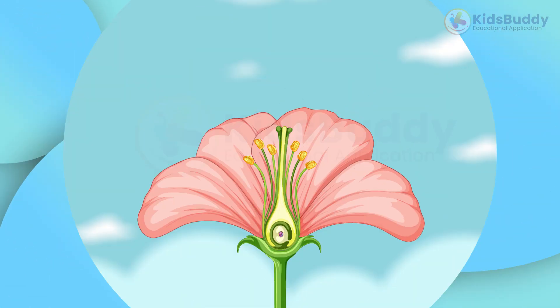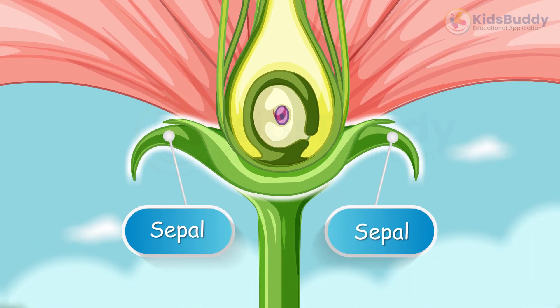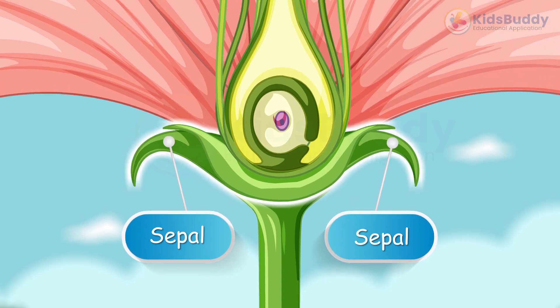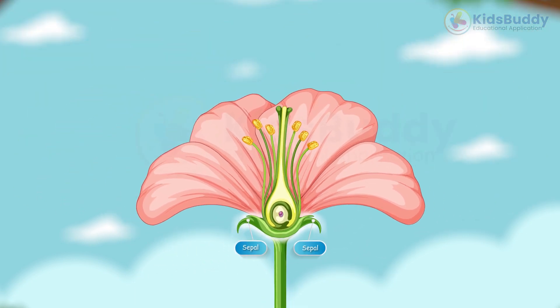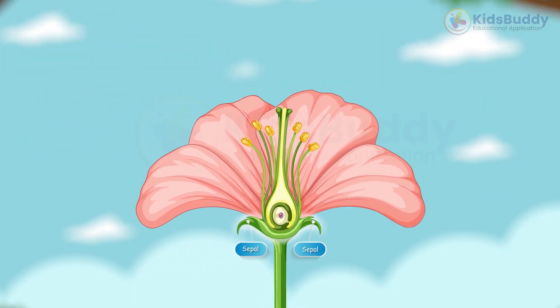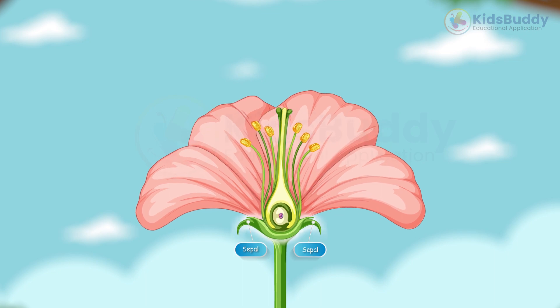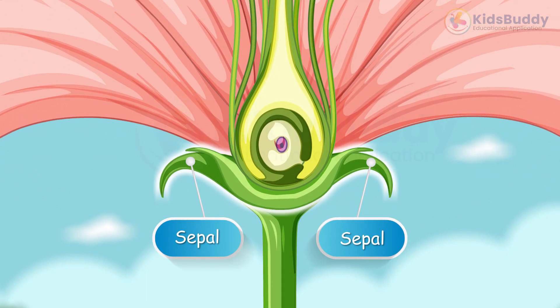Sepals are the outermost part of the flower and are usually green in color. They protect the developing flower bud and provide support to the petals. They look like tiny leaves.